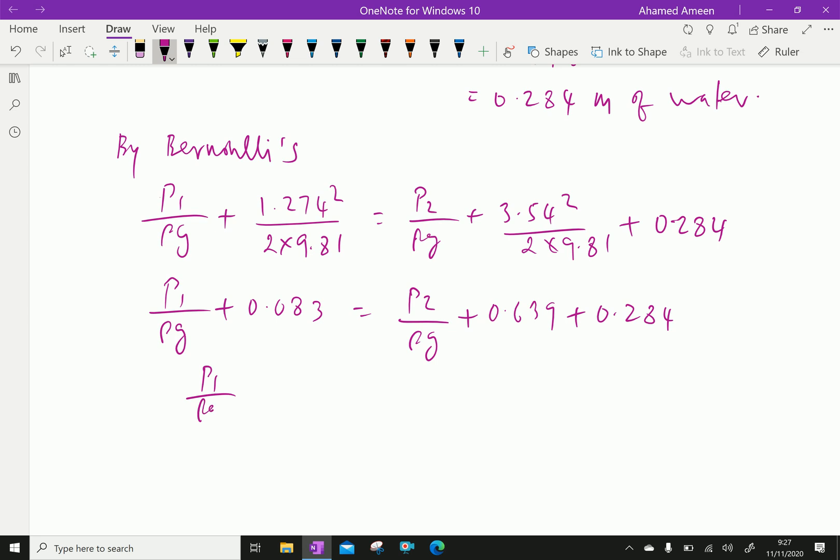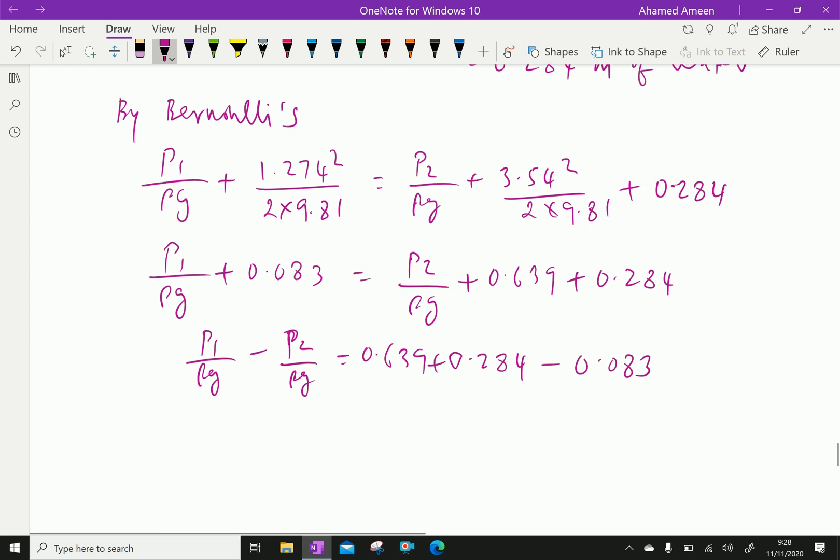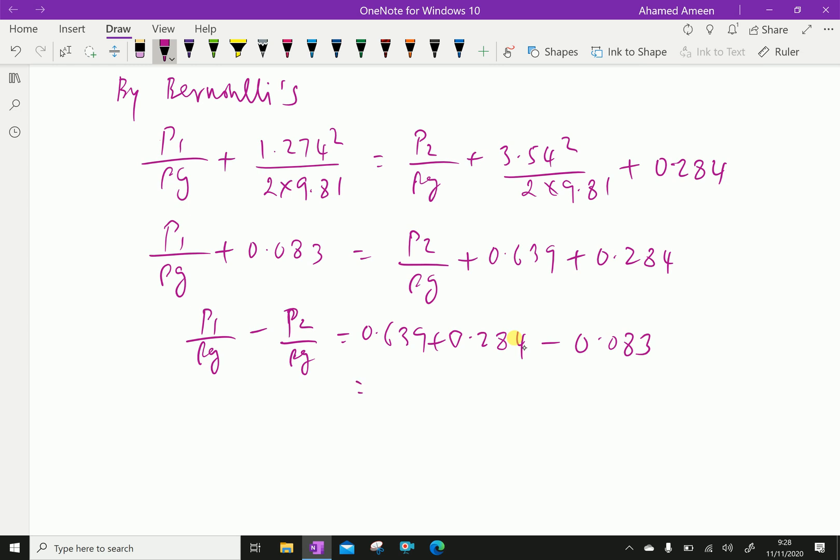P1 by rho G minus P2 by rho G equals 0.639 plus 0.284 minus 0.083, which is equal to 0.84.